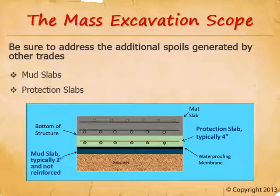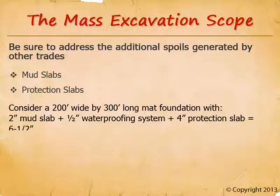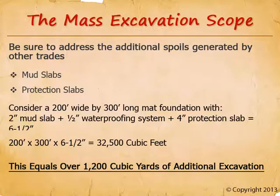The thickness of the waterproofing membrane — typically about a half inch — will not be addressed by the civil engineer on their drawings. The excavation bidders are looking at the civil drawings when preparing their estimates, so that waterproofing membrane is another half inch of depth they need to account for. These slabs are only a few inches thick, so it wouldn't seem like much, but consider this calculation: a 200-foot by 300-foot mat foundation with a 2-inch mud slab, a half-inch waterproofing system, and a 4-inch protection slab totals 6.5 inches. That equals 32,500 cubic feet — over 1,200 cubic yards of additional excavation. When the general contractor forgets to address this in the bid instructions, they end up on the hook for one heck of a big change order request from the excavation subcontractor.